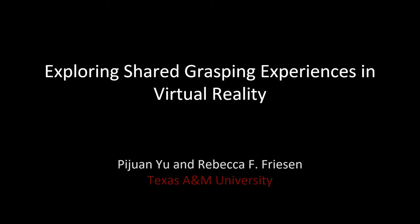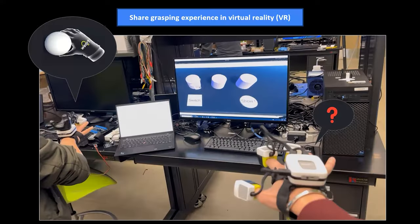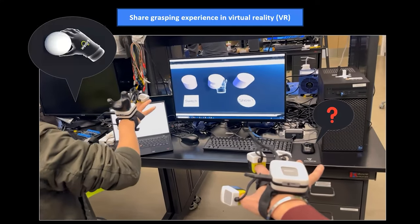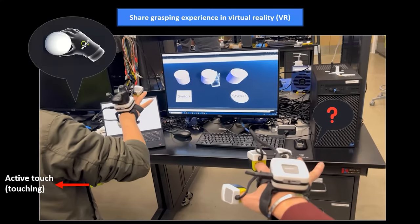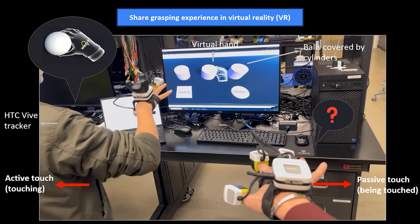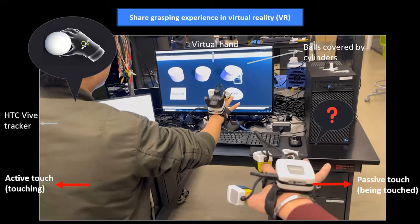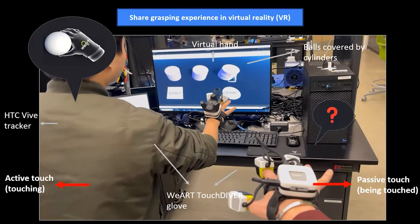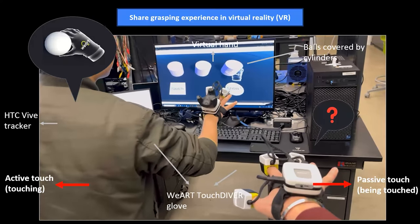We introduce a novel system enabling users to share grasping experiences in virtual reality. On the left, a participant uses the VR TouchDiver glove for direct interaction with virtual balls hidden by cylinders. On the right, another participant experiences passive touch, observing the interaction on screen and feeling the same haptic feedback through their own TouchDiver glove.